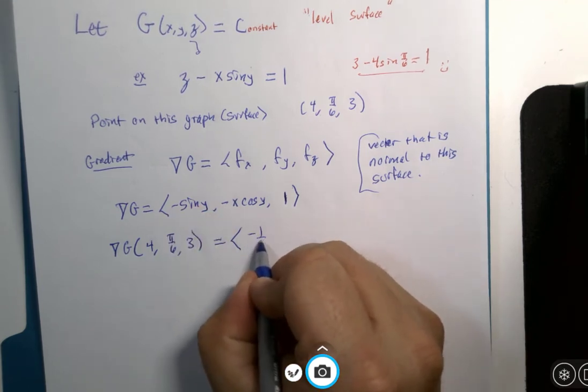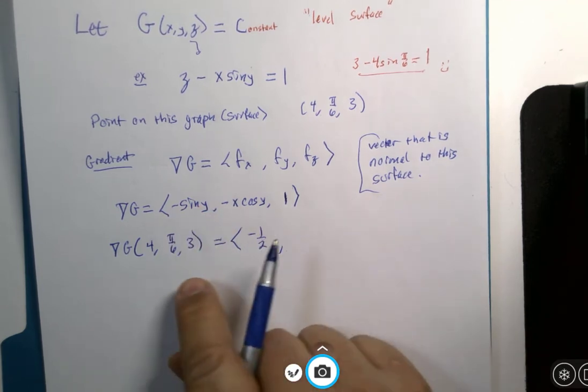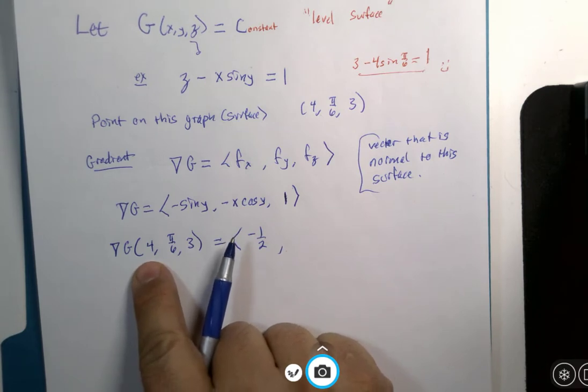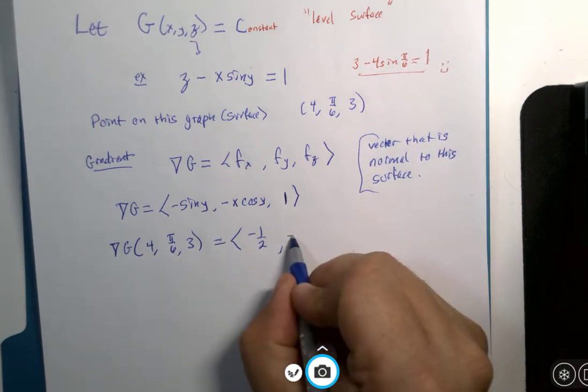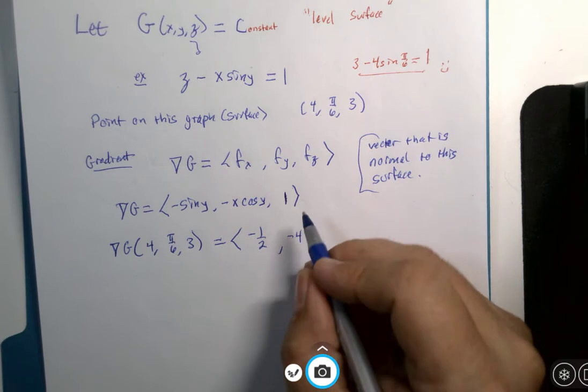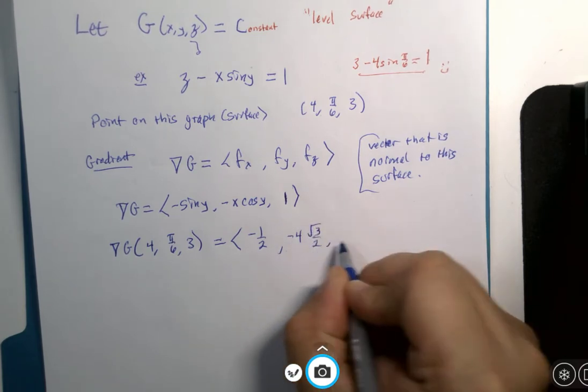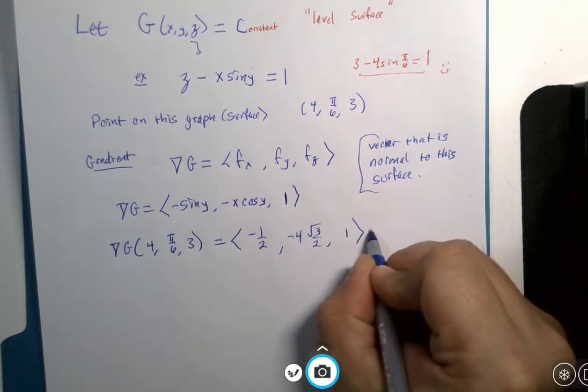X is 4, cosine of π/6 is √3/2, z component is 1,